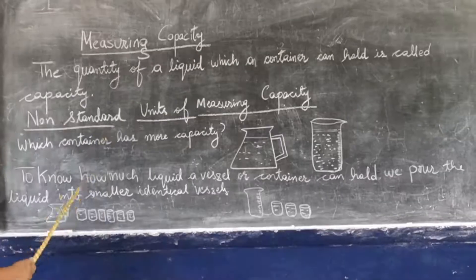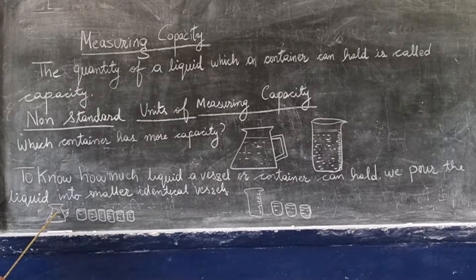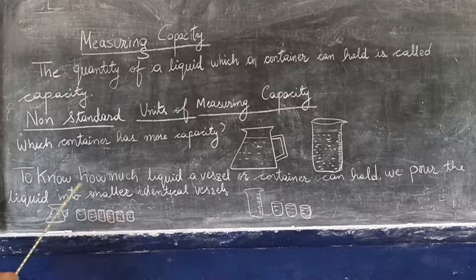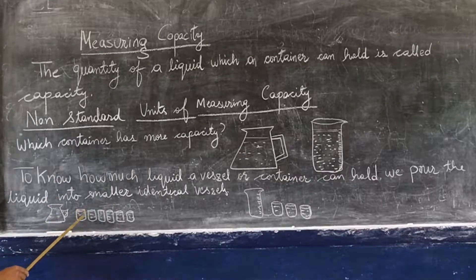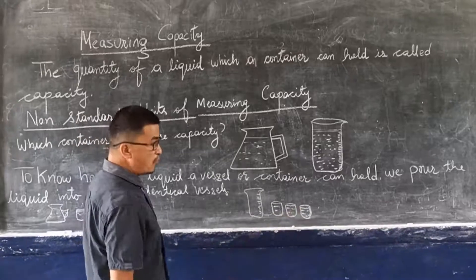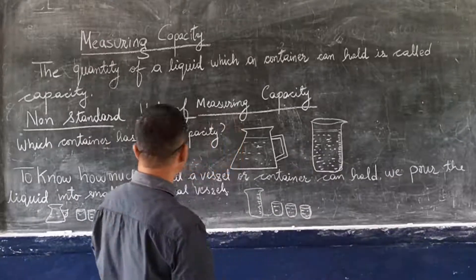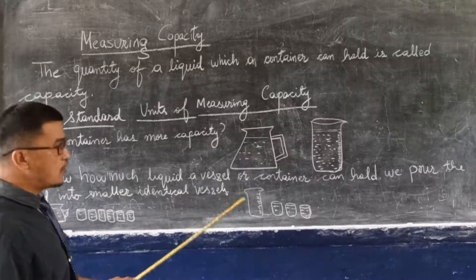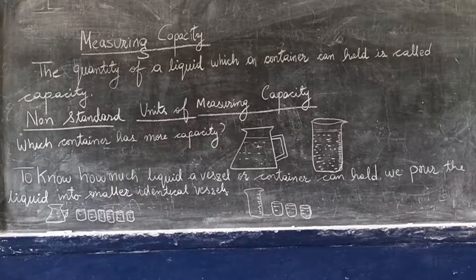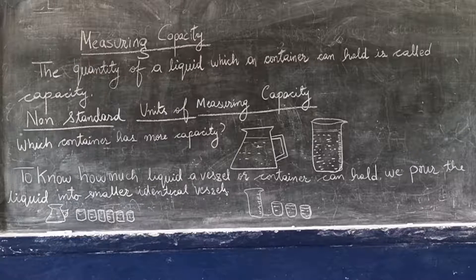From the jug, I pour the liquid and it fills six glasses - one, two, three, four, five, six. From the flask, it fills only three glasses. So the jug has more liquid inside it. The jug can fill six glasses whereas the flask can fill only three glasses. Therefore the jug contains more liquid than the flask.